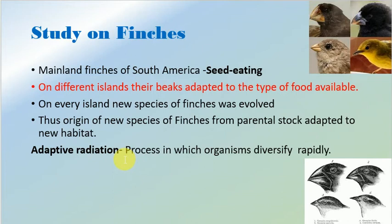What is adaptive radiation? It is the process in which organisms diversify very rapidly. When the finches migrated to different islands, they had to change their body shape and beak size and shape according to the availability of food in that particular geographical area. This process of fast change in morphology, mainly due to environmental conditions, is known as adaptive radiation.